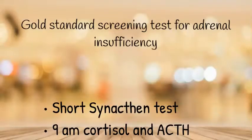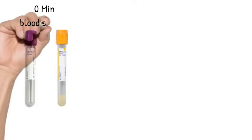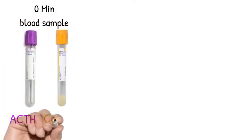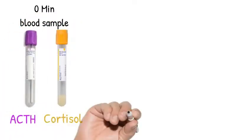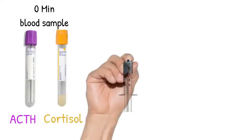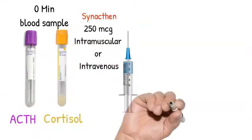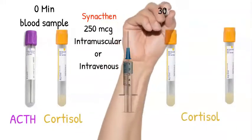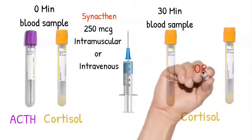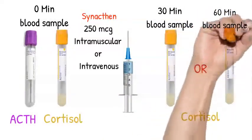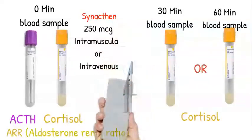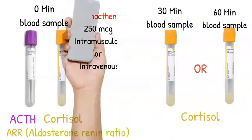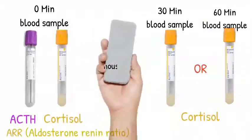For the short synacthen test, take a 0-minute blood sample for ACTH as well as cortisol, then give your patient an injection of synacthen 250 micrograms IM or IV. Then take another blood sample at 30 minutes, 60 minutes, or both for measuring cortisol. Don't forget to add an aldosterone:renin ratio on the initial blood sample if you're thinking about Addison's disease.